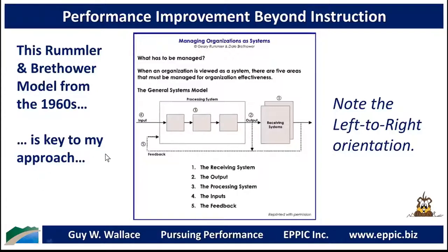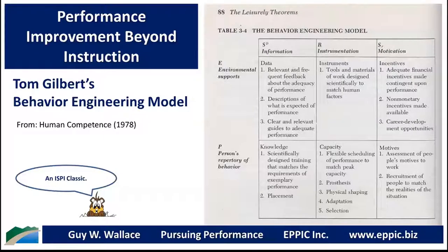This is central to my process orientation since I came into the business. Tom Gilbert, Gary Rumler's partner for a few years at a company called Praxis, published a book in 1978. I was given this book on day one out of college. This is the famous Behavior Engineering Model — the BEM. It breaks things down into what does the environment have to have, and what does the person need to have: knowledge, capacity, motives. The language is somewhat clunky, and it's been modified and adapted by many others, including the late Roger Chevalier and Carl Binder, who has his own version called the Six Boxes Model.